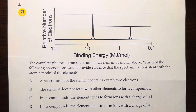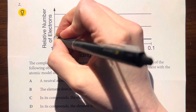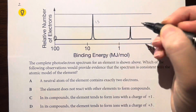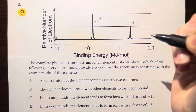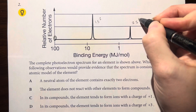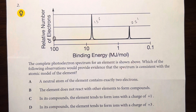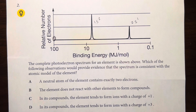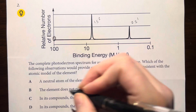The complete photoelectron spectrum for an element is shown above. Which of the following observations would provide evidence that the spectrum is consistent with the atomic model of the element? The nucleus is here, so this is my 1s and this is my 2s. The 1s block is filled; however, my 2s block is not — I only have one electron there. So I have just one electron in my valence shell. Option A says a neutral atom contains exactly 2 electrons — that is not true. We have 2 plus 1, so 3 electrons total.